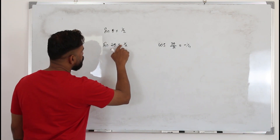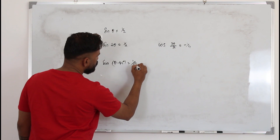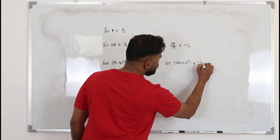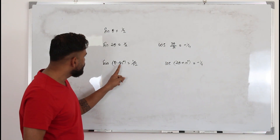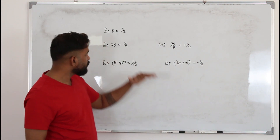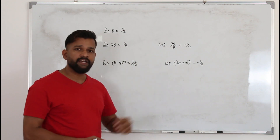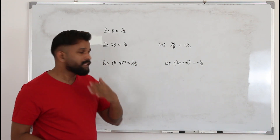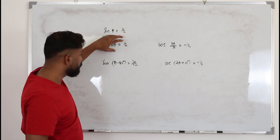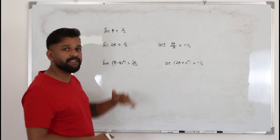Type 2 is when you have plus or minus another value. For example, sin(θ - 45°) = 1/√2 — that's Type 2. Or cos(2θ + 10°) = -1/4. The θ can be just θ or multiplied by a number. The good news is the method is the same as solving simple trigonometric equations, but there is one extra step at the beginning and at the end.